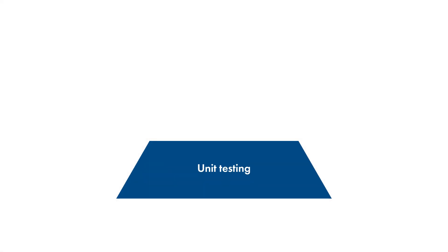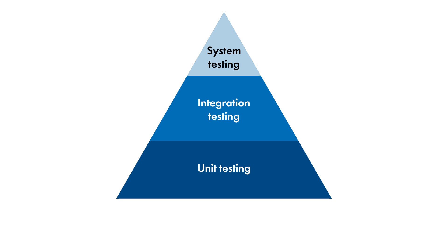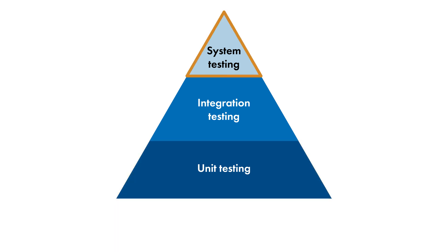Unit testing, integration testing, and system testing make up the software testing pyramid. The pyramid represents the granularity and frequency of execution of the tests. Tests lower on the pyramid are more granular and are run more frequently — they are faster, easier, and cheaper to write and run, and can also be done earlier in the development process. Tests higher on the pyramid are more time-consuming, expensive, and must be done later in development. The pyramid emphasizes having a larger number of low-level tests and fewer high-level tests.